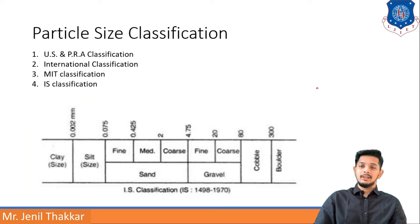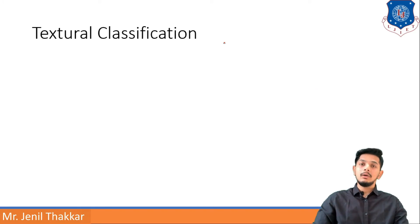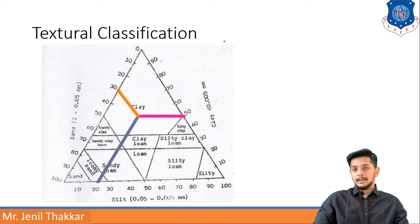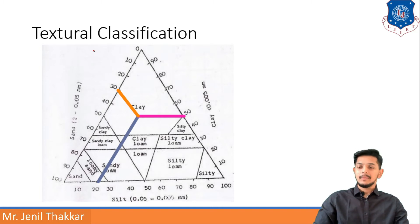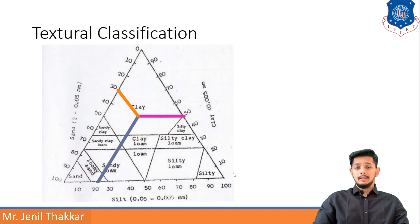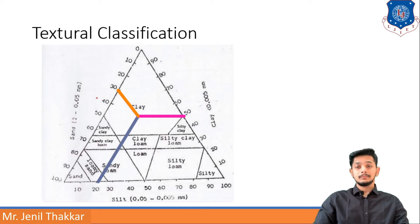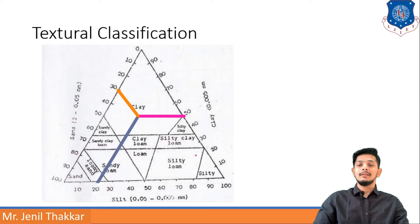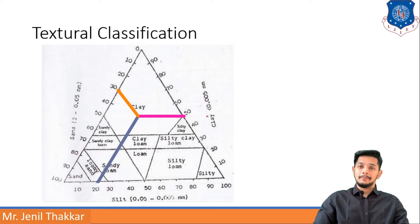Let us move to the next classification system: textural classification. In textural classification, an equilateral triangle is prepared with all sides equal. By looking at this triangle we can determine if a soil is sand, silt, or clay. Sand ranges from 2 mm to 0.05 mm, silt ranges from 0.05 mm to 0.005 mm, and clay is less than 0.005 mm.